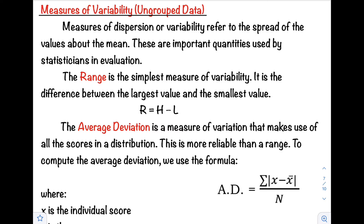Hi class, welcome back to our channel. For this video, I will show you how to solve for the measures of variability for ungrouped data. Measures of dispersion or variability refer to the spread of the values about the mean. The difference with measures of central tendency is that central tendency measures the center of our data, while measures of variability measure how spread out our data is.